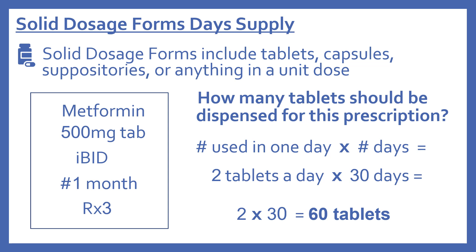We'll take our number of tablets used in one day and multiply it by the number of days. One BID is twice a day, so that would be a total of two tablets in a day, times one month. One month we use 30 days as a good round number. So two times 30 will be 60 tablets.